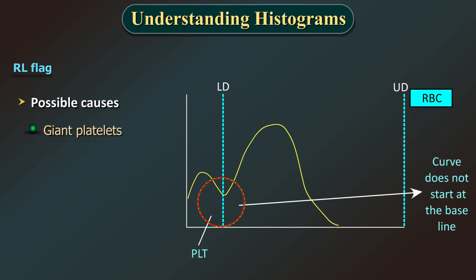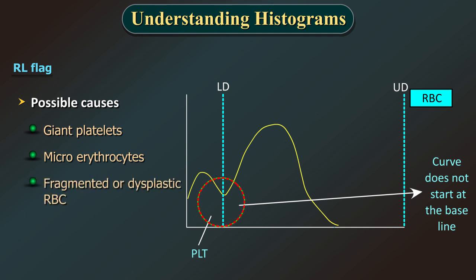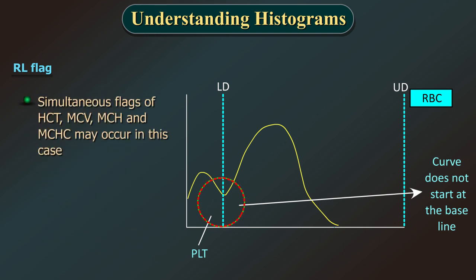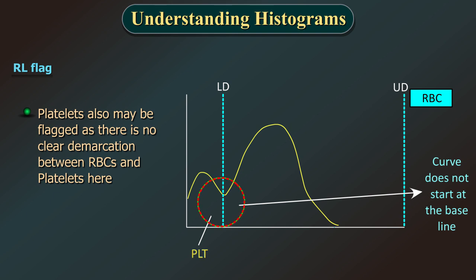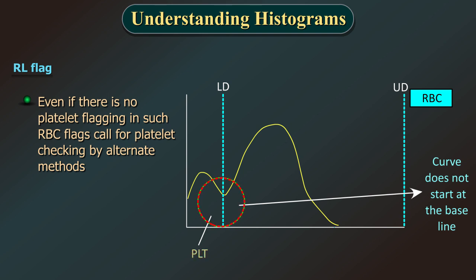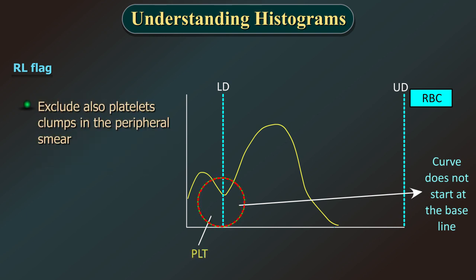Possible causes of the RL flag include giant platelets, microerythrocytes, fragmented or dysplastic RBCs, or platelet clumps. The analyzer is unable to differentiate between microerythrocytes, giant platelets, and fragmented RBCs as they are similar in size, lying within the range of 25–30 FL. Simultaneous flags of HCT, MCV, MCH, and MCHC may occur. Platelets may also be flagged due to no clear demarcation between RBCs and platelets. Even without platelet flagging, check platelets by alternate methods and exclude platelet clumps on the peripheral smear.